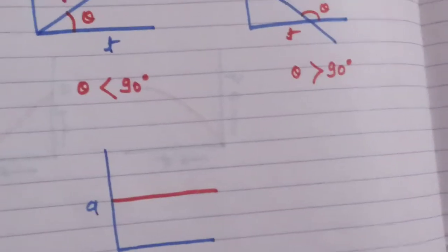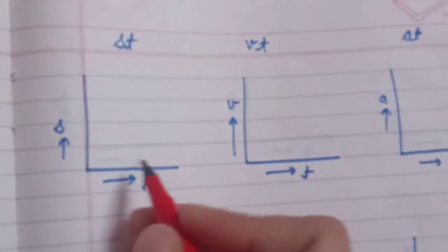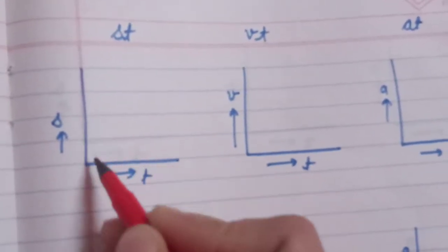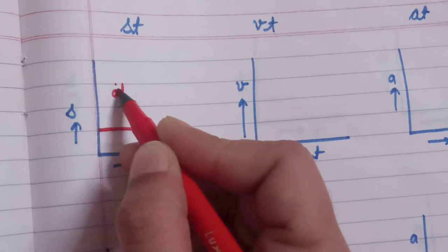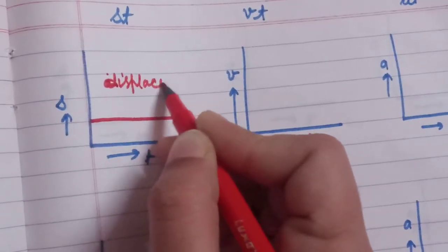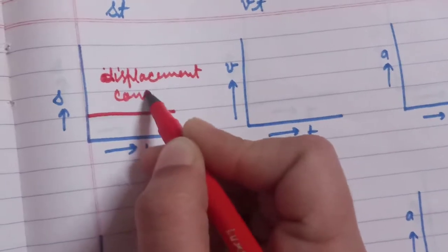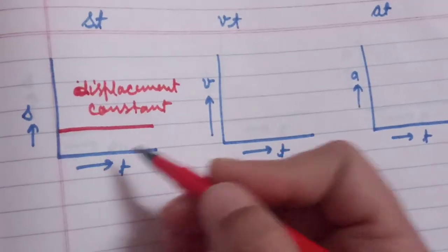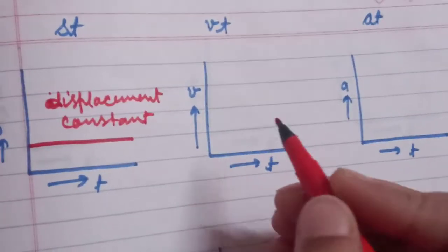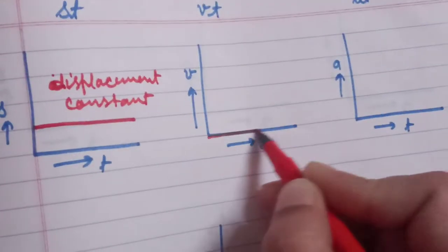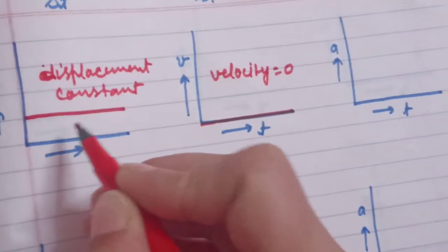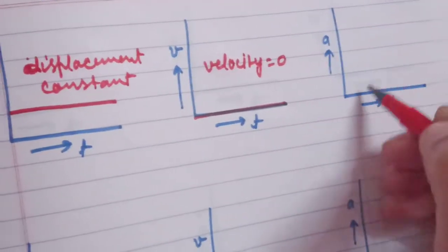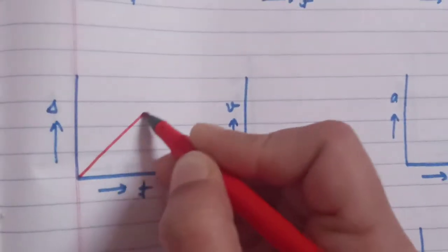In the ST graph, if the line is parallel, displacement is constant. In the VT graph, the same condition is drawn like this — here velocity is zero. When displacement is constant, the velocity is zero. And the AT graph is not possible for this condition.